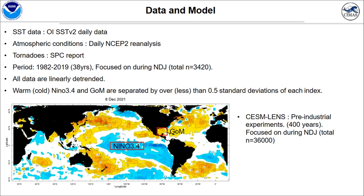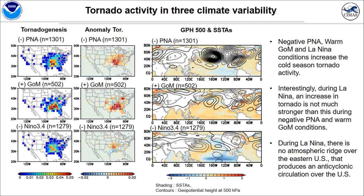We use daily OISST data and NCEP-2 reanalysis data for investigating the large-scale condition. Tornado data is from the SPC report data. The study period is from 1982 to 2019, and we only focus on the cold season: November to January. All data have the linear trend removed to avoid the influence of global climate change. We use the Niño 3.4 index and Gulf of Mexico index to separate warm and cold phases of each index using 0.5 standard deviation.